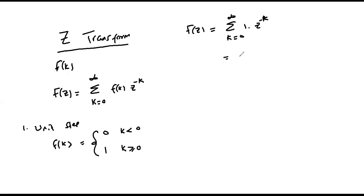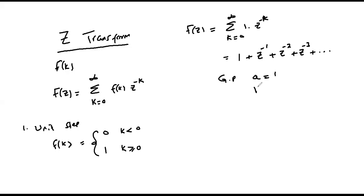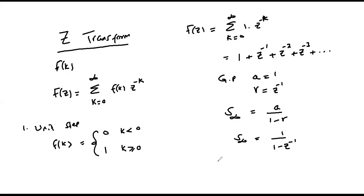This equals: when k is zero we get one, when k is one we get z to the power minus one, plus z to the power minus two, plus z to the power minus three, and so on to infinity. We notice this is a geometric progression whose first term A equals one and common ratio R equals z to the power minus one. The sum to infinity is A over one minus R, giving one over one minus z to the power minus one. Therefore the Z-transform of the unit step function is one over one minus z to the power minus one, which can also be written as z over z minus one.